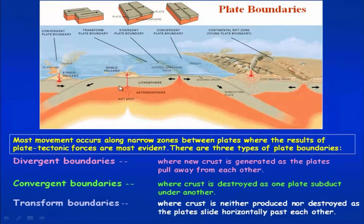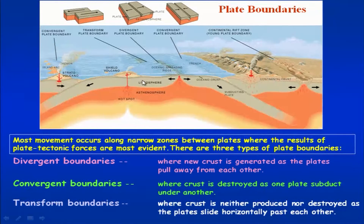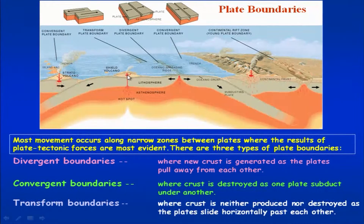One more feature observed is the hot spot. This hot spot is like a plume where magma will be continuously poured onto the surface. This connectivity remains, so if any lithospheric plate passes over it, there will be a volcanic eruption on the surface — the lithospheric plate will have an active volcano wherever it passes through the plume or over the hot spot.